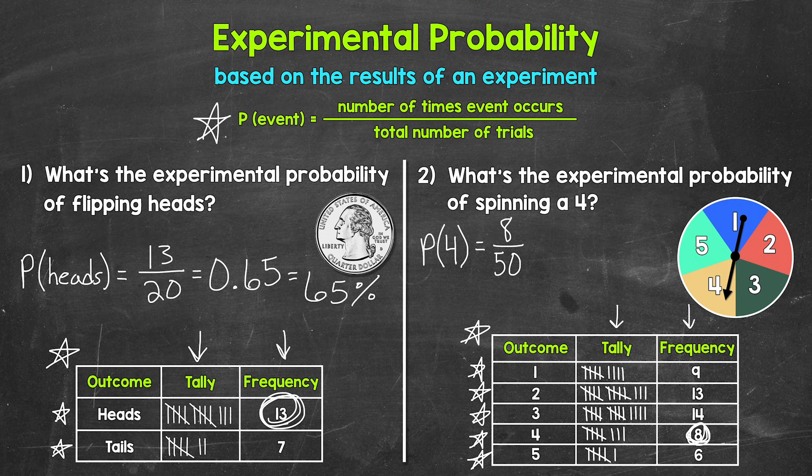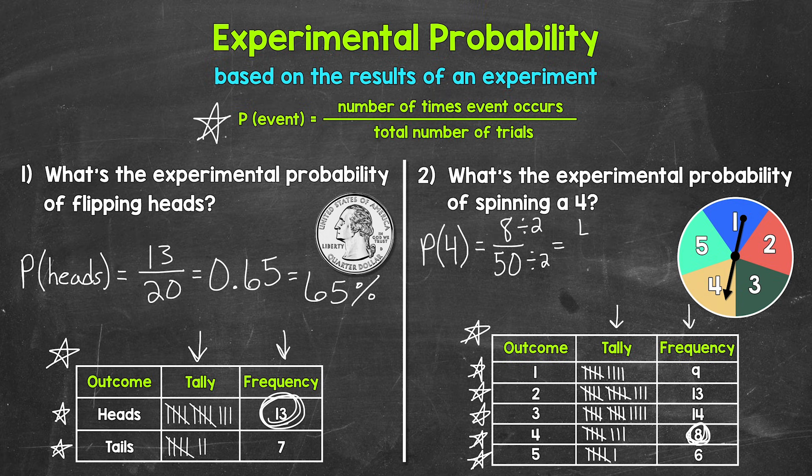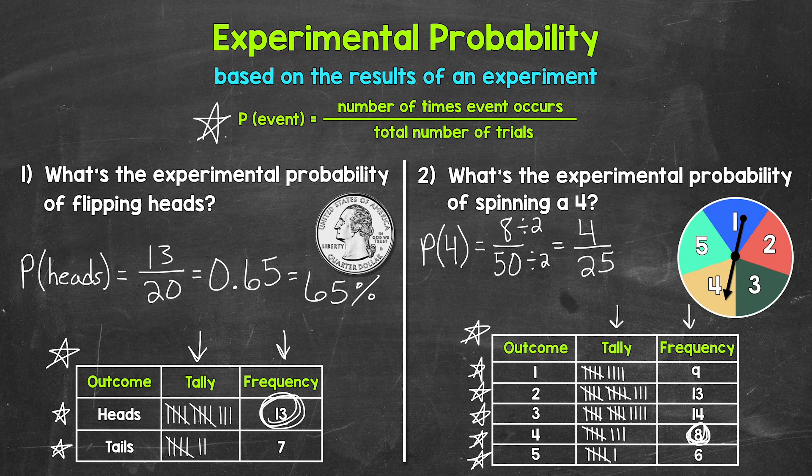Now this fraction can be simplified if we would like. Let's do that just to show what that will be as well. Eight and 50 have a common factor of two that we can divide both eight and 50 by. So eight divided by two is four and 50 divided by two is 25. The only common factor between four and 25 is one. So this is simplified now. Four over 25 is our simplified fraction. Now, keep in mind, both of these fractions are equivalent and correct. So if you are instructed to simplify your fractions, this is just something to look out for.